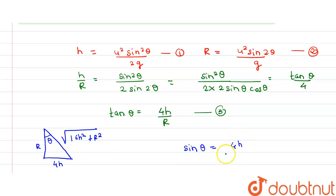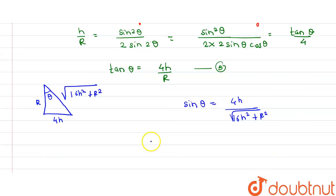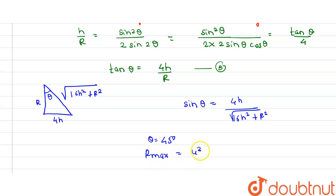For range to be maximum, we need theta equal to 45 degrees. When theta is 45 degrees, the range is maximum, so R_max equals u² / g. Let us call this equation 4.